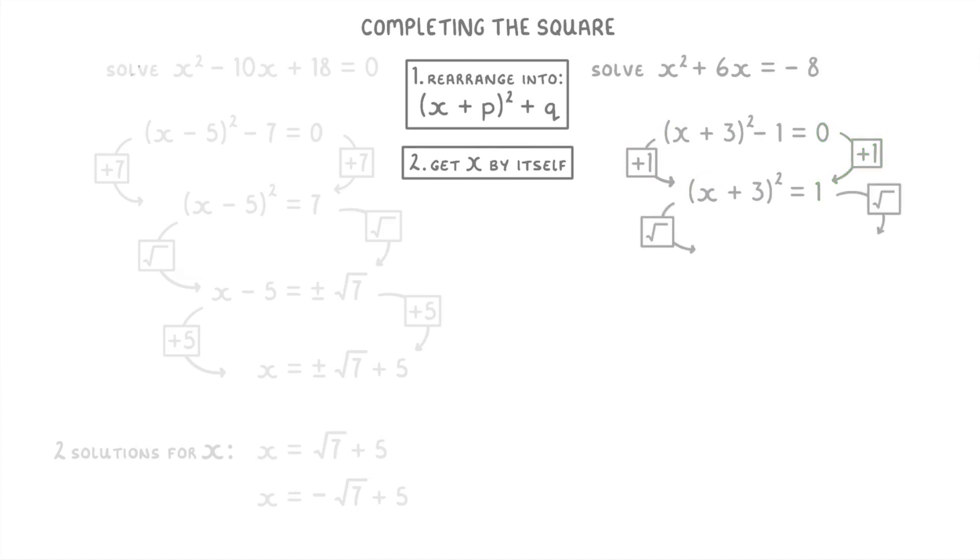Then we square root both sides to get x plus 3 equals plus or minus root 1, which is really just plus or minus 1, because the square root of 1 is just 1. And then we can subtract 3 from both sides to get x equals plus or minus 1 minus 3.